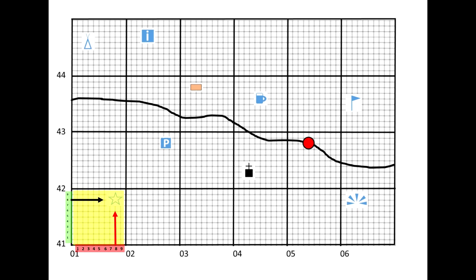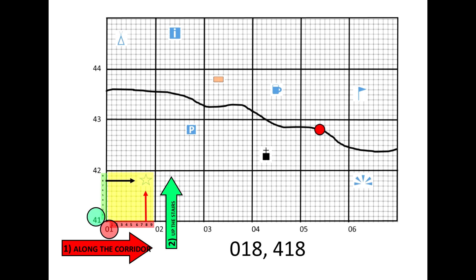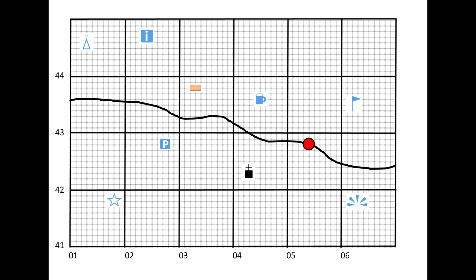Our final example of a six-figure grid reference is the star symbol, which signifies a tourist attraction. Using all the same principles we've applied — going along the corridor and up the stairs — our six-figure grid reference for the tourist attraction is zero one eight, four one eight. Similarly to the four-figure grid reference sheet, I want you to attempt to create six-figure grid references for the rest of the symbols. All the answers will be in the description below, so attempt them and then check your answers.